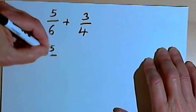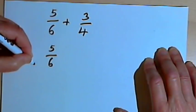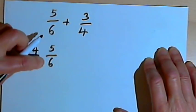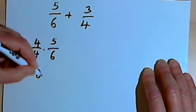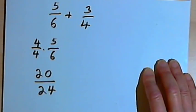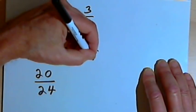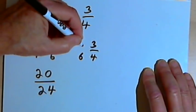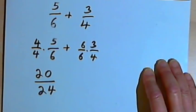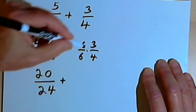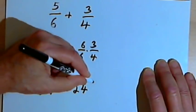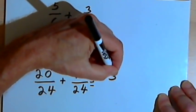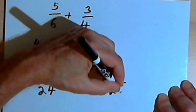I have to take 5 over 6 and turn the 6 into a 24, which means I'm going to multiply it by 4, basically multiplying by the fraction 4 over 4. And when I do that, 4 over 4 times 5 over 6, I'll get 20 over 24. Now I have to go through the same process for the second fraction, 3 over 4. I want to turn the denominator into 24, so I would multiply by 6 over 6. Then 6 times 3 is 18, and 6 times 4 is 24. Now I'll add 20 and 18, that's 38, and the common denominator is 24.